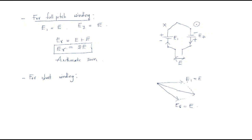If you consider these two slots, the EMFs are arranged such that e1 is generated as e and e6 is also generated as e. The resultant EMF is in vector form, so the angle between these two vectors we can call alpha.